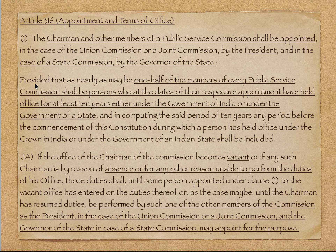इसमें एक proviso है: half of the members of every public service commission shall be persons who at the dates of their respective appointment have held office for at least 10 years, either under the government of India or under the government of the state. मतलब public service commission — चाहे union का हो, state का हो, या joint हो — उसके आधे members वो होने चाहिए जिनका कम से कम 10 साल का experience है under government of India or government of any state, यानी IAS, IPS officers।